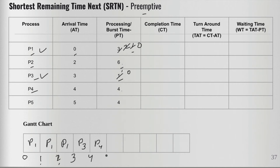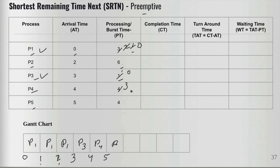We run P4 for one unit — its remaining time becomes three. At interval five, P5 has also arrived. We compare: P2 has six, P4 has three, and P5 has four. P4 still has the shortest remaining time, so P4 continues.